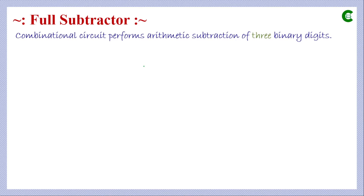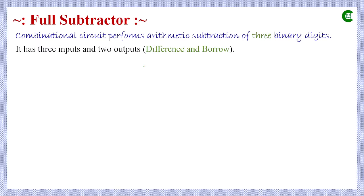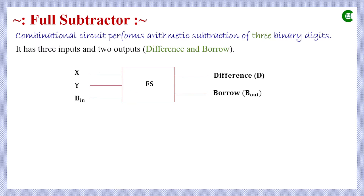A full subtractor is also a combinational circuit that performs arithmetic subtraction of three binary digits. It has three inputs and two outputs: difference and borrow. The block diagram shows inputs X, Y, and BIN (borrow input), where BIN could be the output of another subtractor circuit.